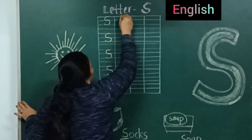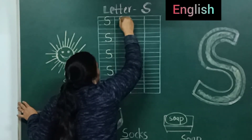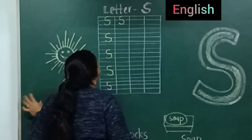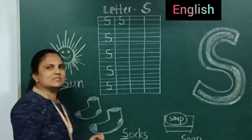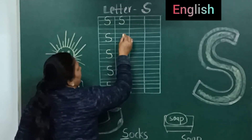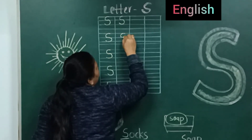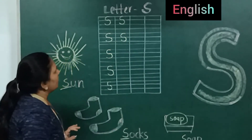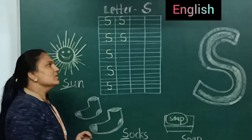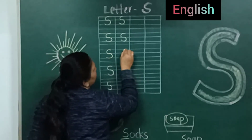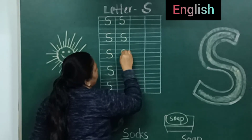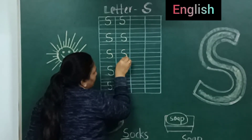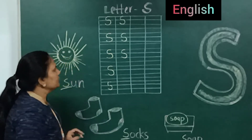First, put your pencil on the red line and we will make a curve to the first blue line. And then we will make another curve to the second blue line. S for sun. Speak and write — make the curve, and another curve to the second blue line.